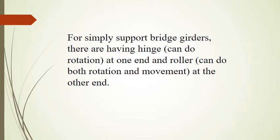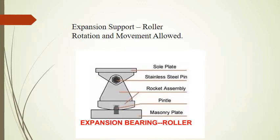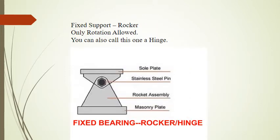Both bearings will not resist moment. Here are the cartoon-type pictures for the roller and rocker. The expansion support — roller — allows rotation and movement. The fixed support — rocker — allows only rotation. You can also call this one a hinge.